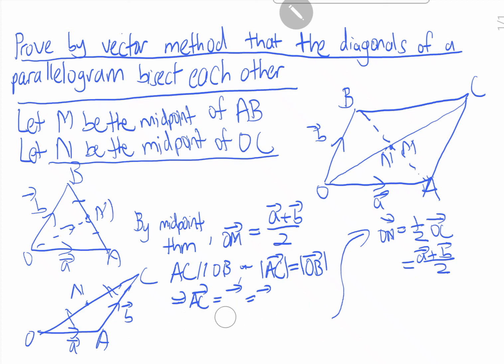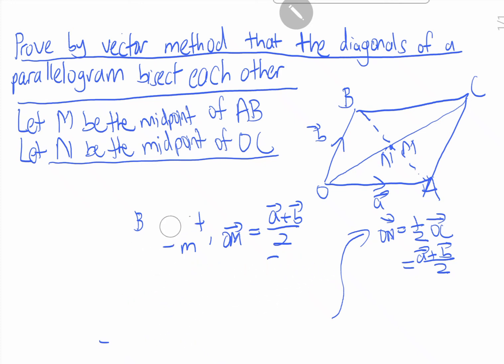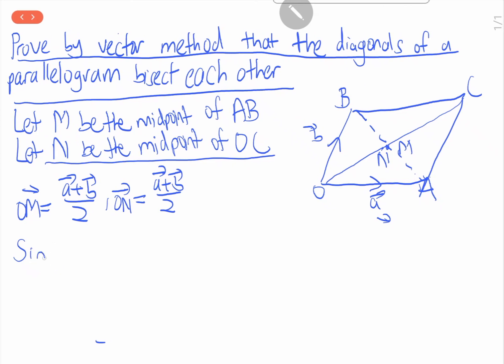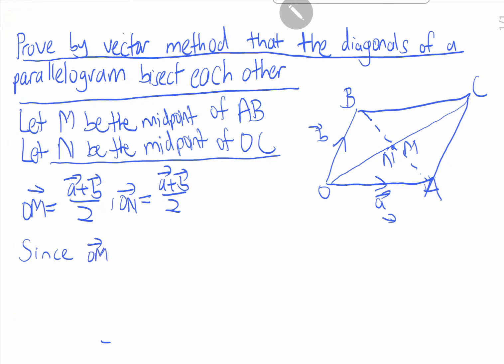So now, we have found that OM equals A plus B over 2, and ON also equals A plus B over 2. Therefore, since OM equals ON, M and N are exactly the same point.